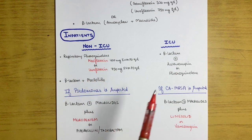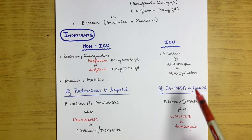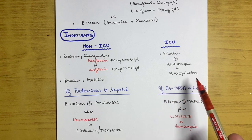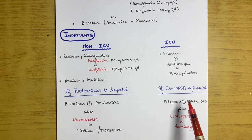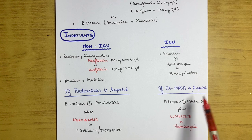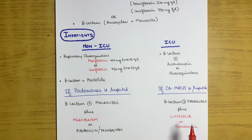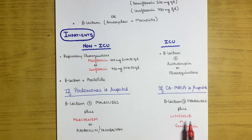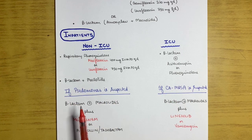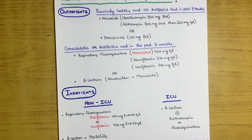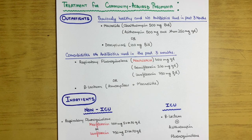For ICU patients, beta-lactam is given with azithromycin (a macrolide) or fluoroquinolones. If community-acquired MRSA (methicillin-resistant Staphylococcus aureus) is suspected, linezolid or vancomycin is added to the beta-lactam and macrolide regimen. If Pseudomonas is suspected, meropenem or piperacillin-tazobactam is added. This entire treatment guideline is according to the latest Harrison's edition.